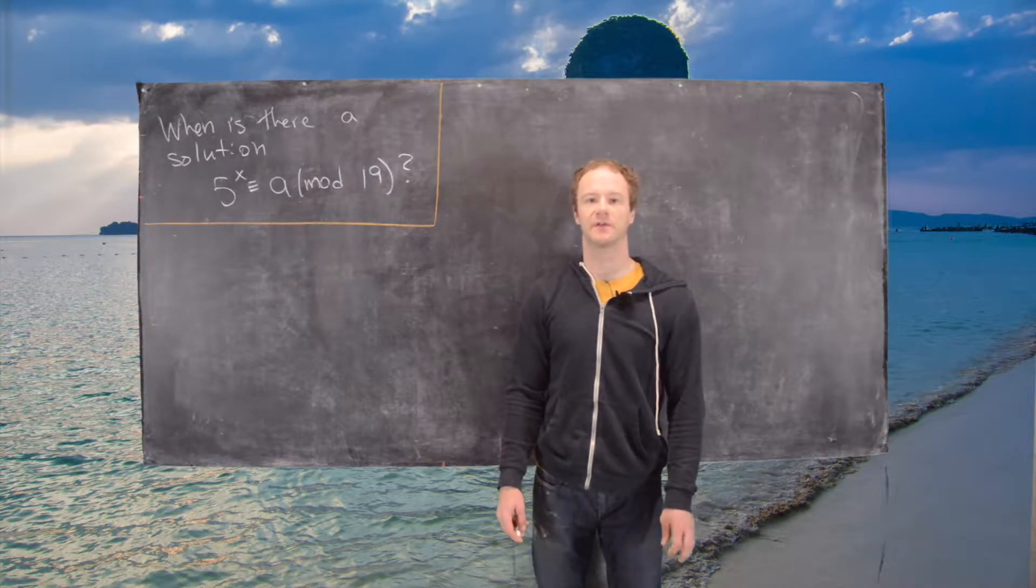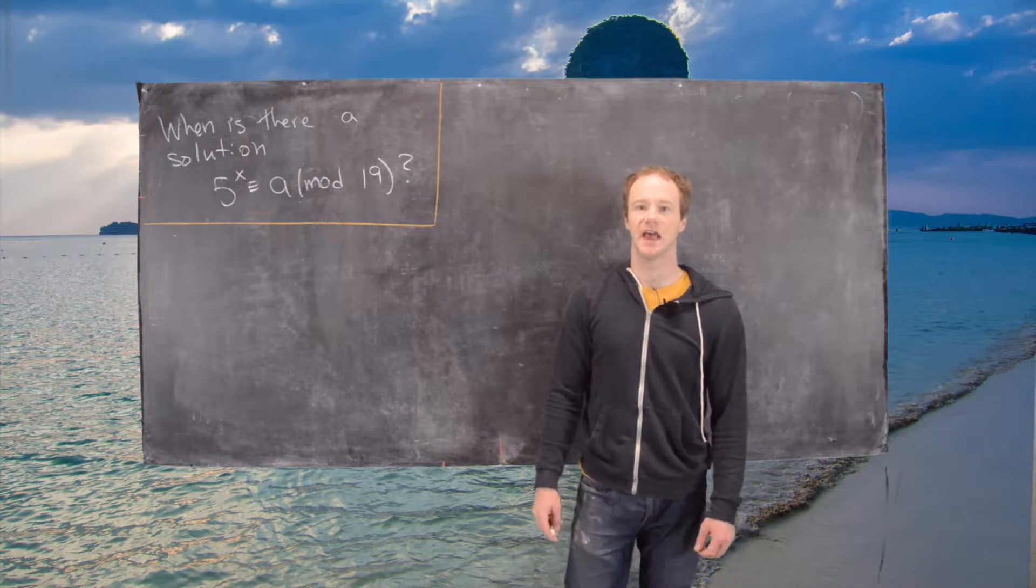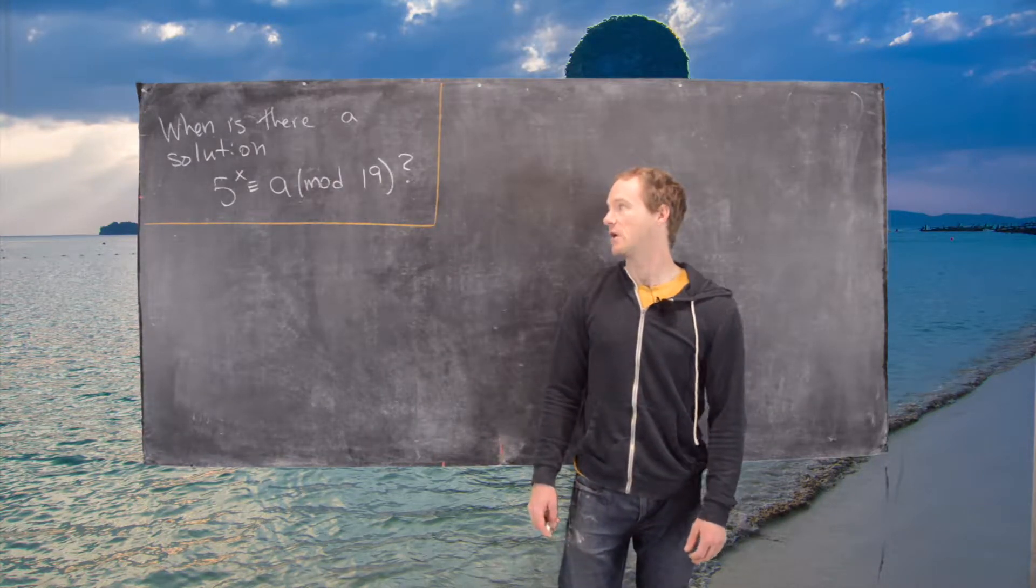In this video we're going to look at the solvability of the following exponential congruence. So we have 5 to the x is congruent to a mod 19, so we want to find the values of a that make this solvable.